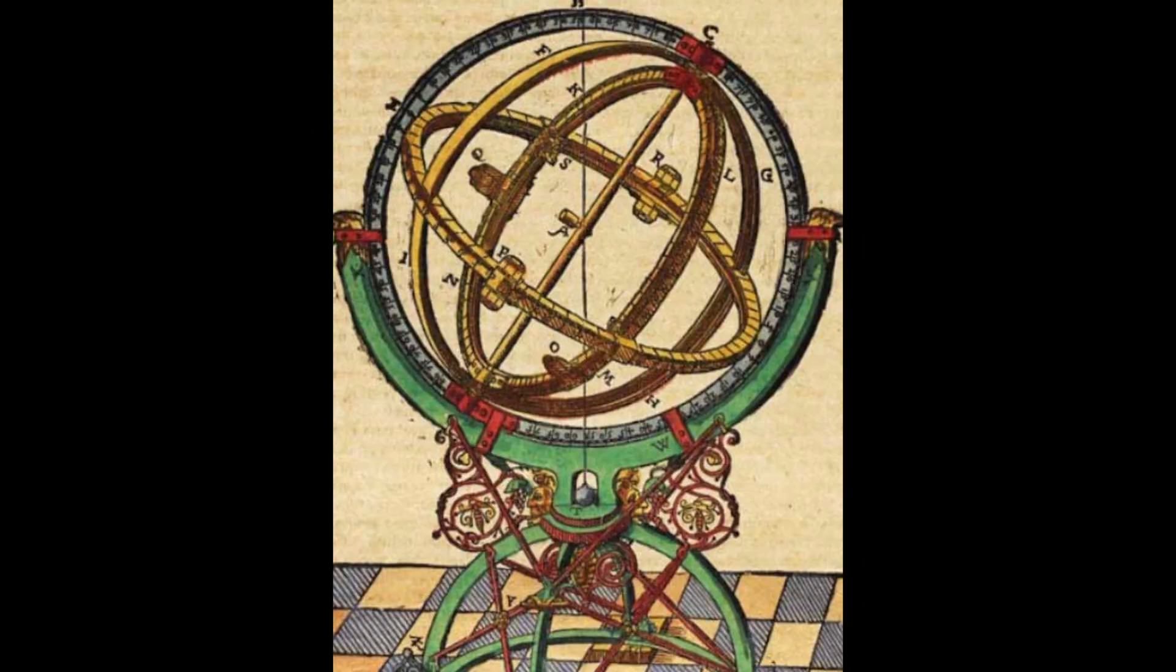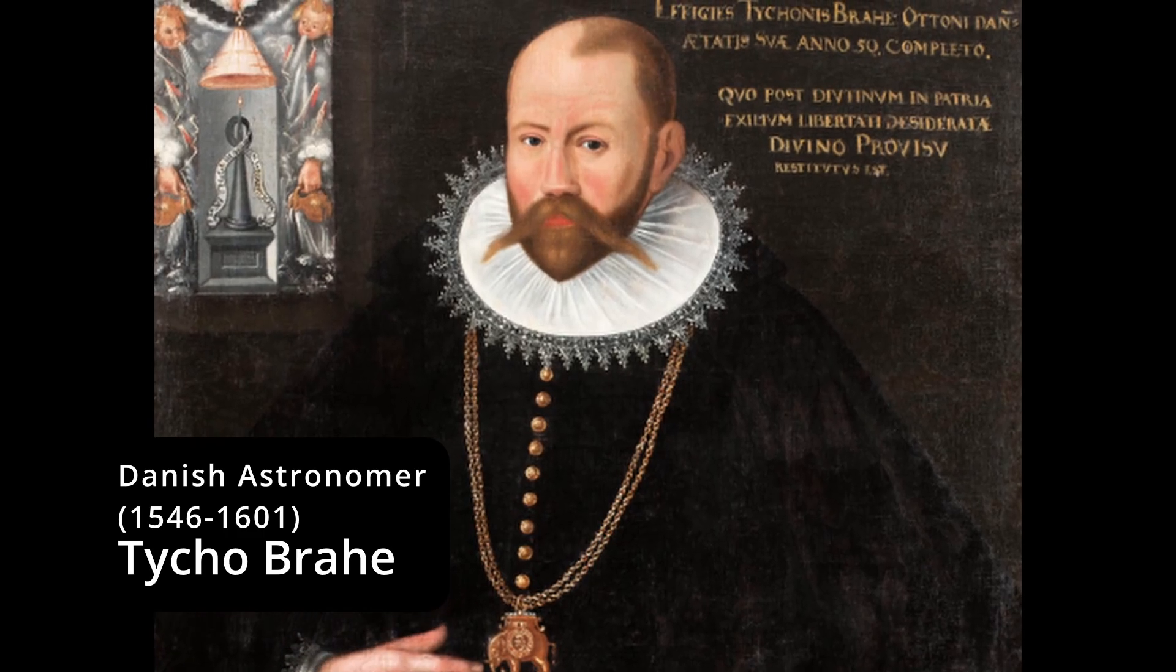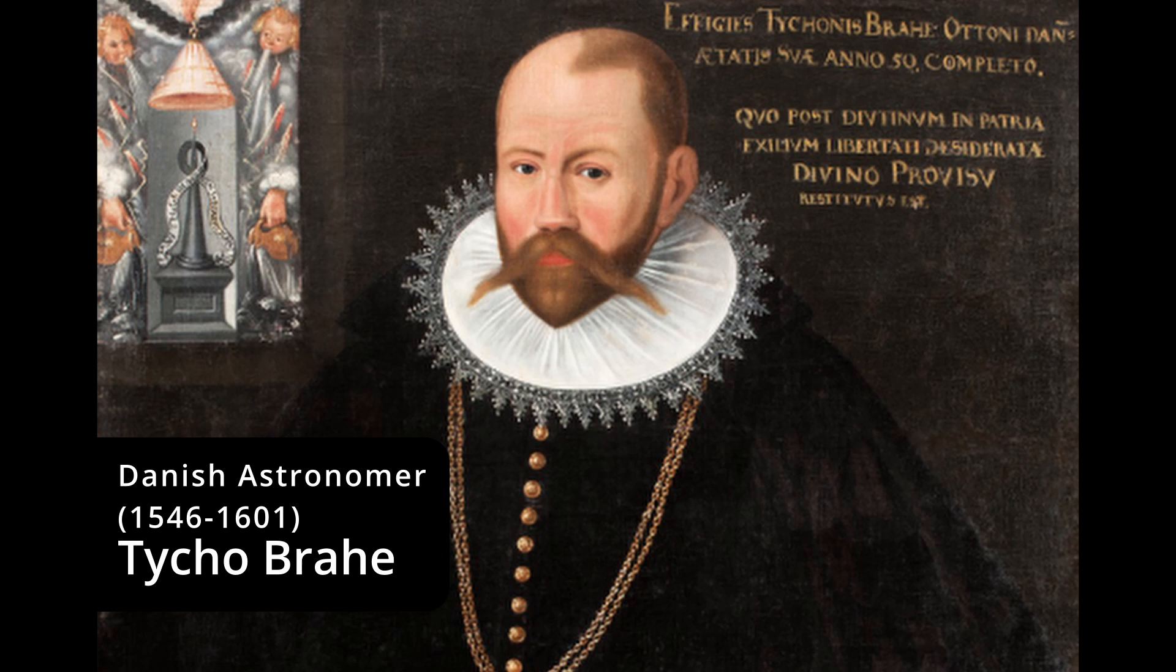After crunching the numbers, the results confirm his suspicions. The Earth does not appear to move around the Sun. This contradicts Copernicus' heliocentric model and supports Brahe's own unique beliefs. How did he reach this conclusion, and why is it significant? Let's find out.